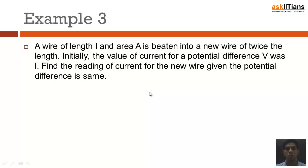Let's do a question based on the concepts we just learned. The question goes like this: A wire of length L and area A is beaten into a new wire of twice the length. Initially, the value of the current for a potential difference V was I. Find the reading of the current for the new wire given the potential difference is same.